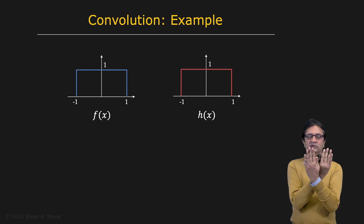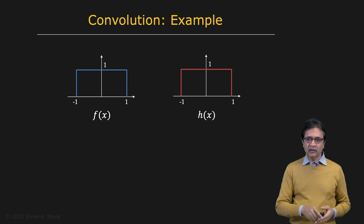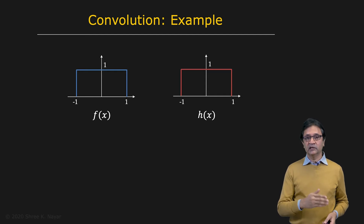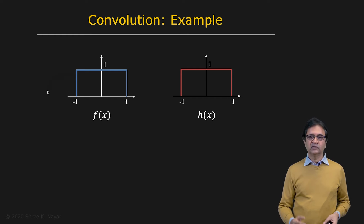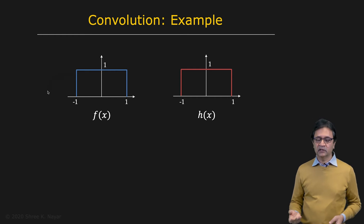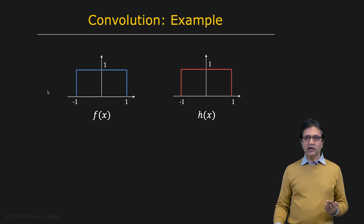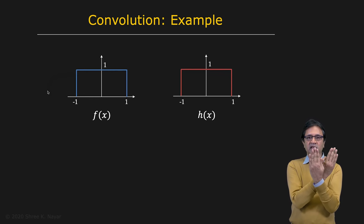But at some point, the two rectangles are going to meet — they're going to touch. And that happens to be for the value of x equal to minus 2. So somewhere around here, these two will be sitting next to each other. That's when interesting things begin to happen.